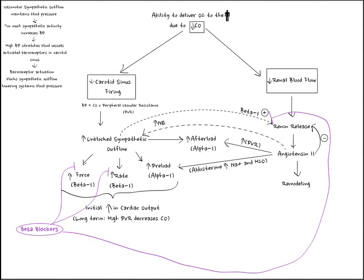Constriction of the venous system by alpha-1 activation through sympathetic outflow can be counteracted by the addition of nitrates. Nitrates are converted to nitric oxide within the smooth muscle of the vessels, causing vasodilation and decreasing preload. Hydralazine is a direct vasodilator that works mostly on the arterioles, counteracting alpha-1 activation in the arterioles seen from sympathetic outflow, resulting in decreased afterload.